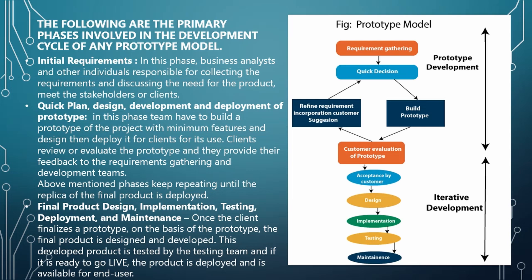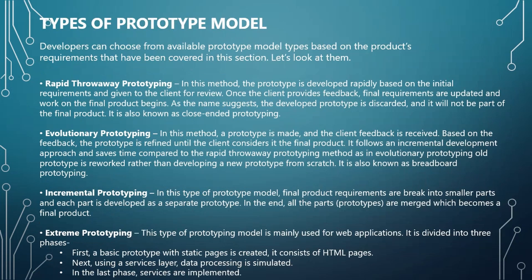There are a few types of prototype models. Developers can choose from available prototype models based on the product requirements. The first type is rapid throwaway prototyping. In this method, the prototype is developed rapidly based on the initial requirements and given to the client for review. Once the client provides feedback, final requirements are updated and work on the final product begins. The developed prototype is discarded and will not be part of the final product. It is also known as close-ended prototyping.